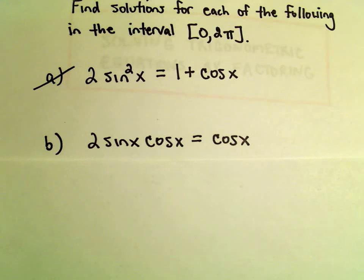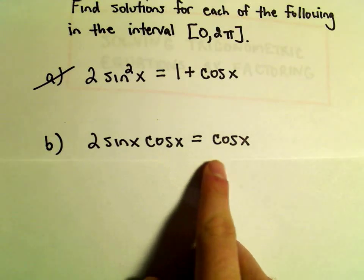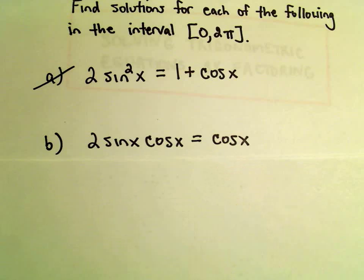A very easy thing to do in this problem would be to divide both sides by cosine x, but that would actually be incorrect. You would end up losing some solutions.